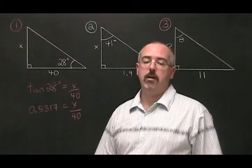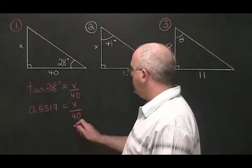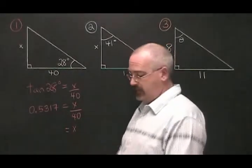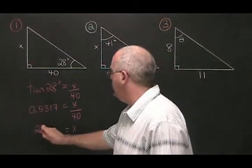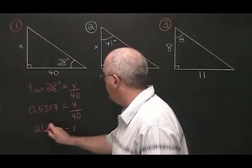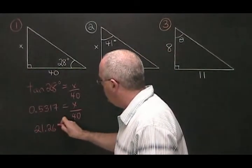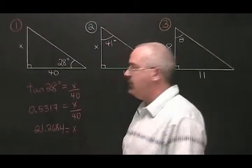Since our variable is being divided by 40, we multiply both sides by 40. X is equal to 21.2684. We have our answer.